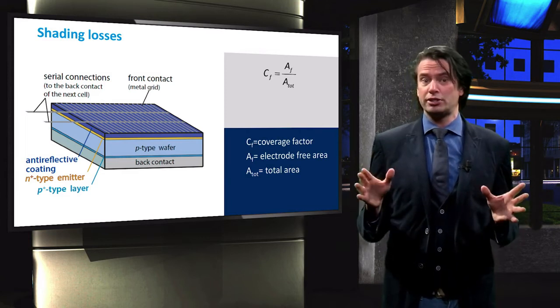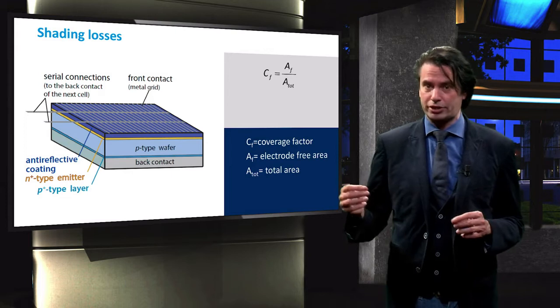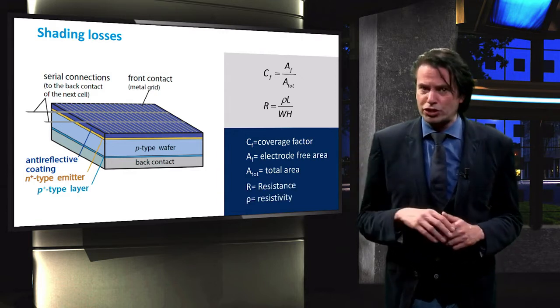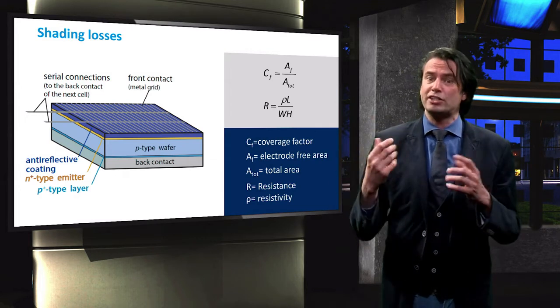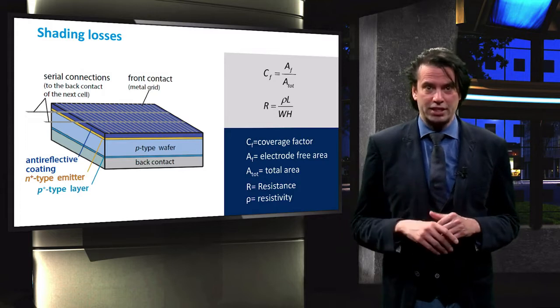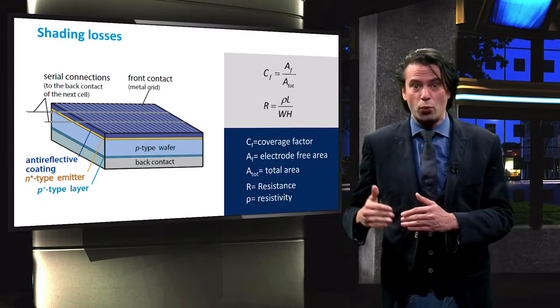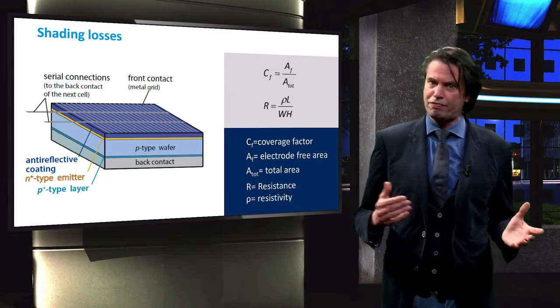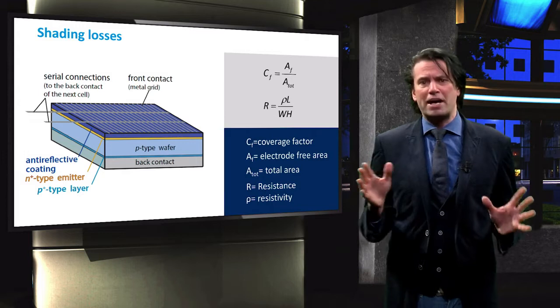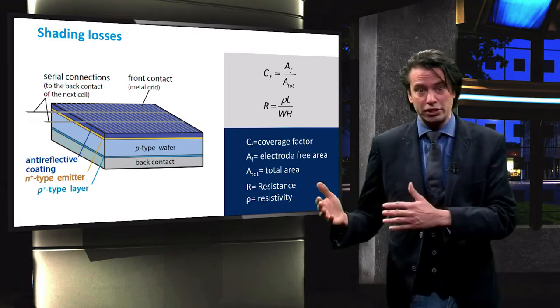The metal fingers have a certain resistance against electron movement. The larger the resistance in the fingers, the greater the losses during charge carrier collection. We would like the resistance to be as small as possible. The resistance R of such a finger can be expressed as a function of the width and height of the finger and resistivity of the metal, indicated by rho. The resistance can be decreased by increasing the width-height product or decreasing the length of the fingers, which means increasing the number of busbars. Any of these measures will however inadvertently decrease the electrode-free surface area and the coverage factor.